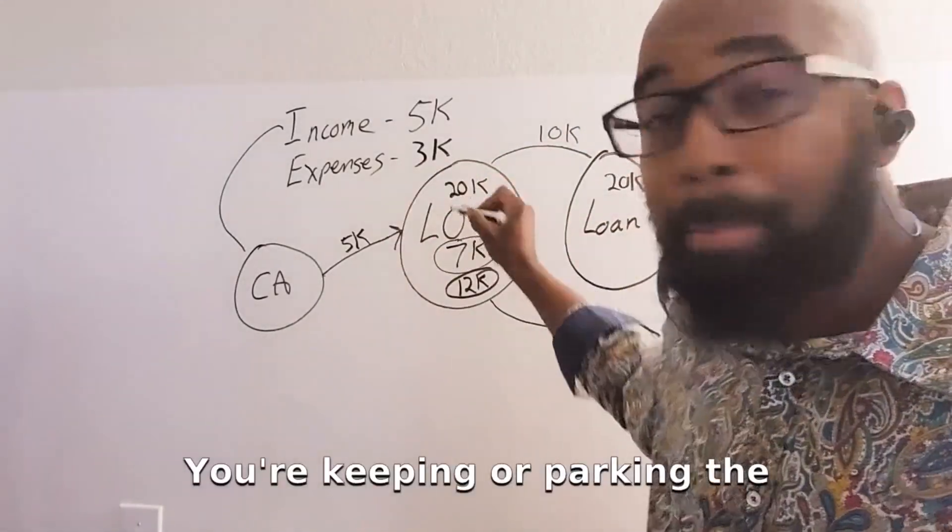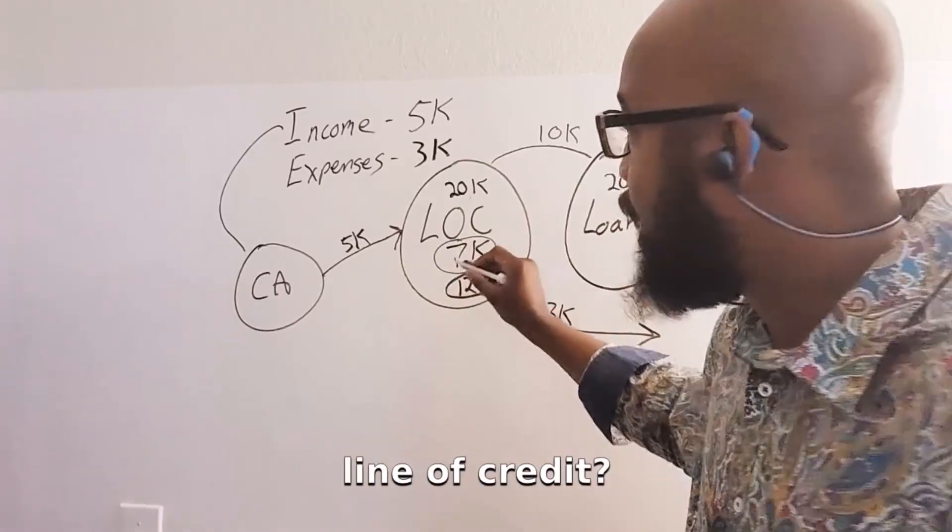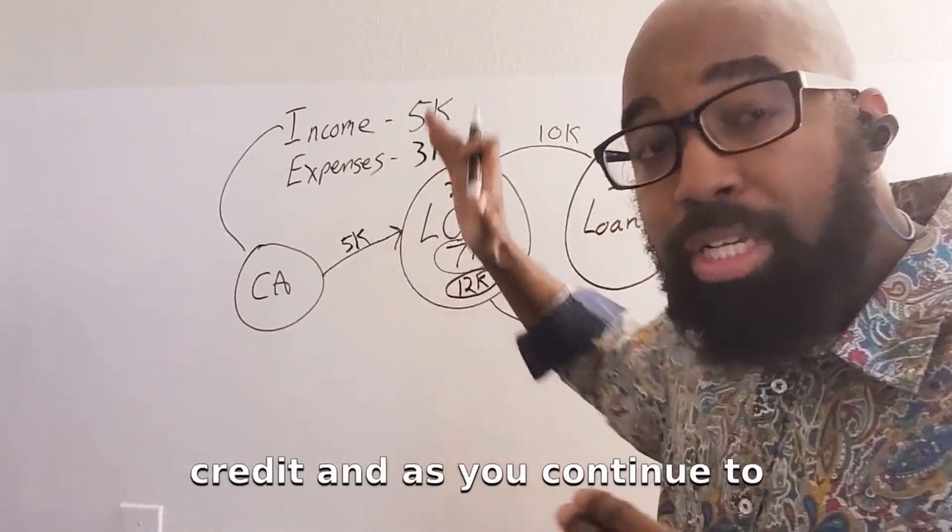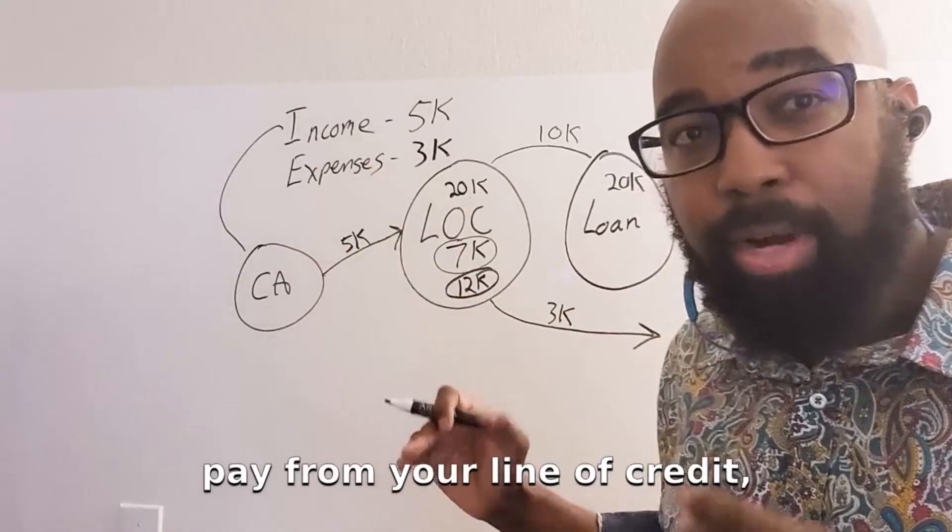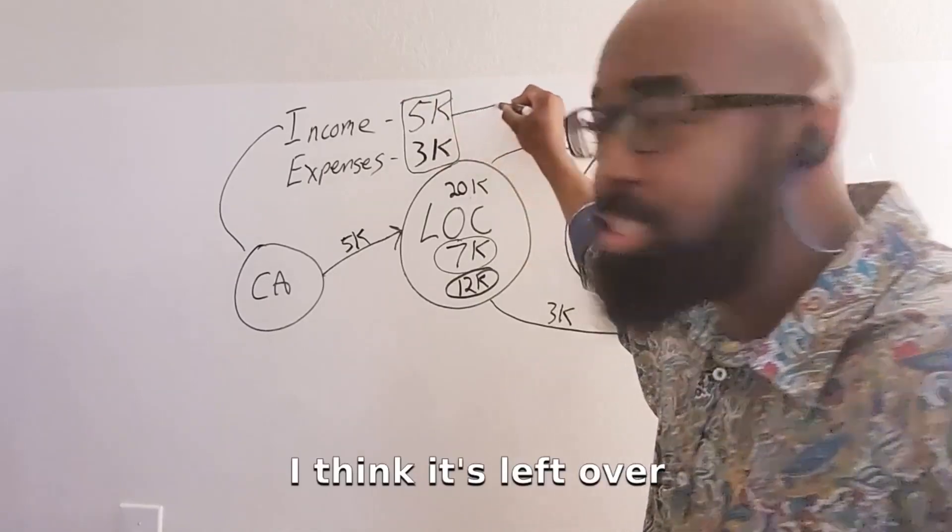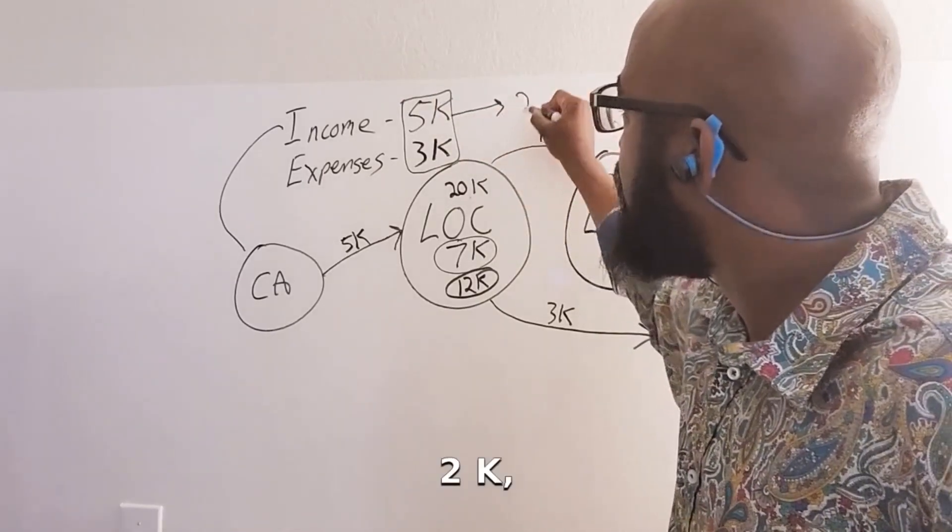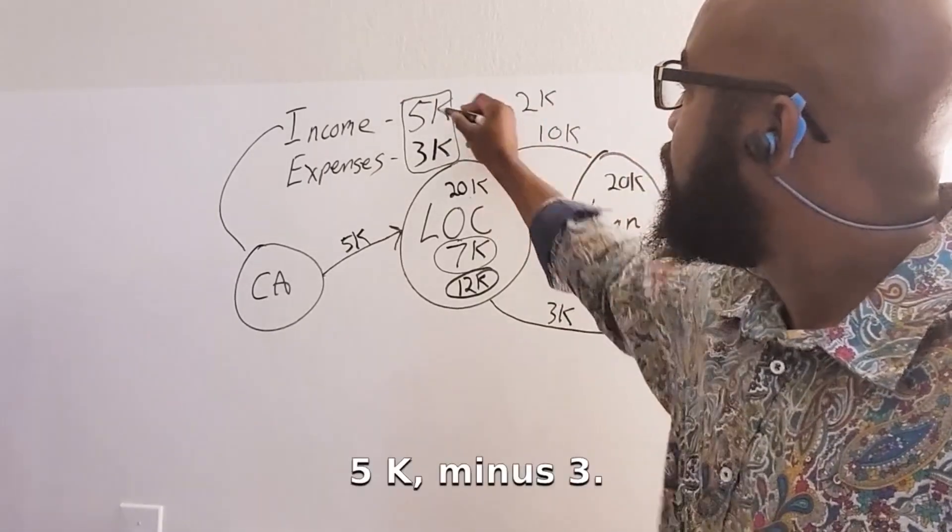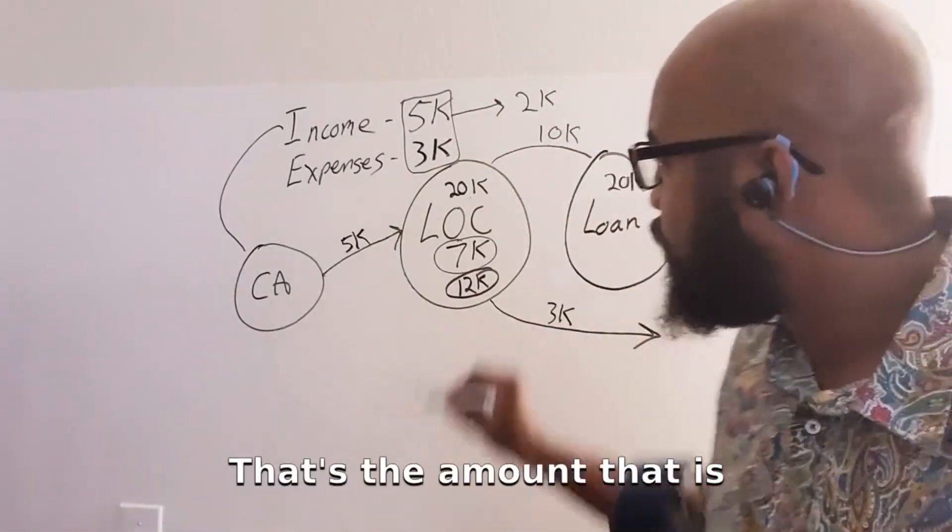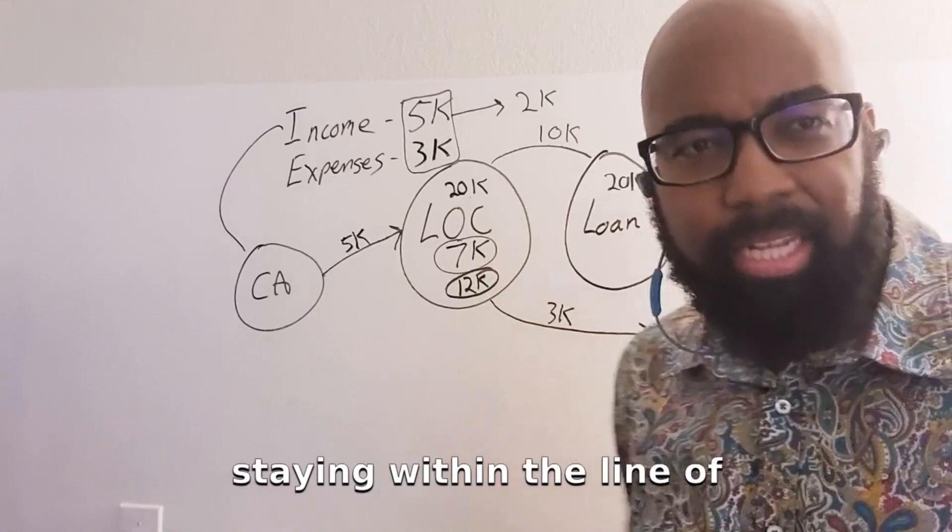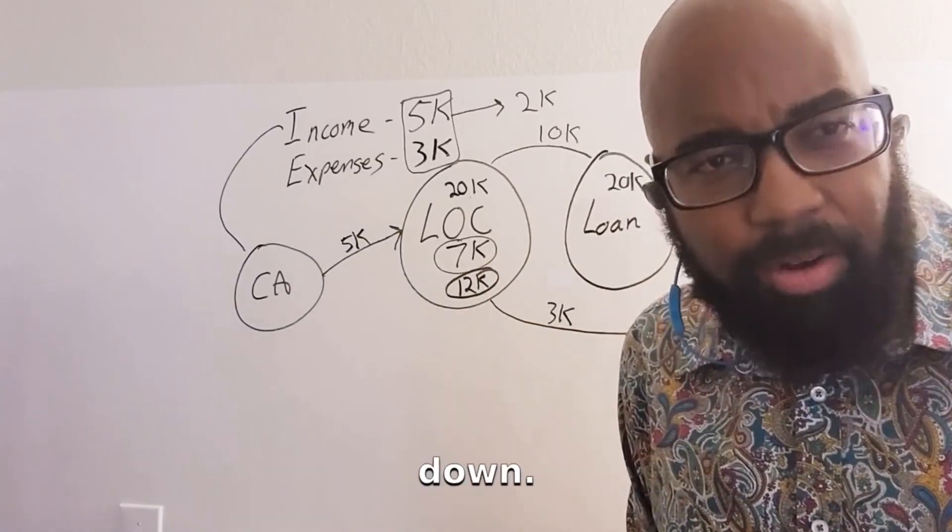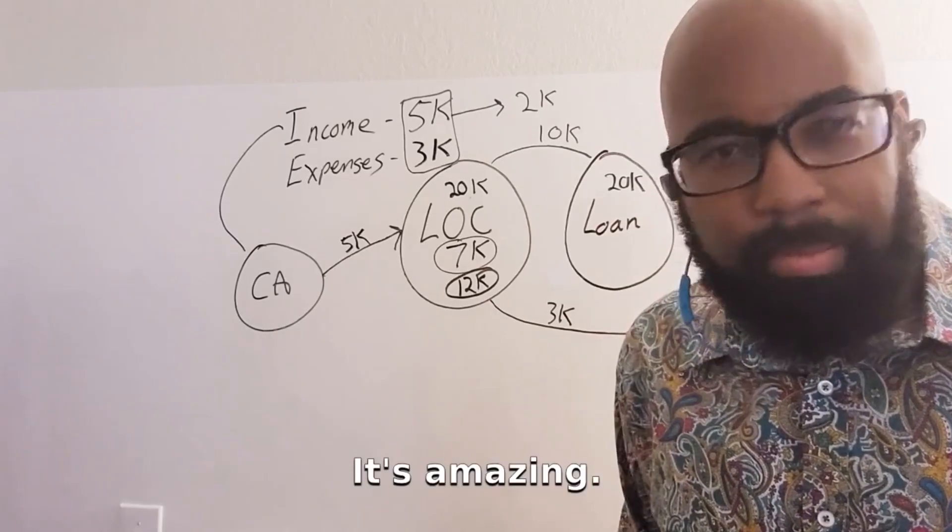Remember, you're keeping or parking your income in your line of credit. And as you continue to pay from your line of credit, what is the amount that gets left over? 2K. 5K minus 3K is 2K. That's the amount that is staying within the line of credit. That is how the line of credit is getting paid down. Does that make sense? It's amazing.